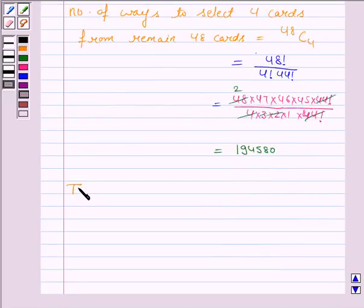Now, the total number of ways to select 5 cards in which there is exactly 1 ace